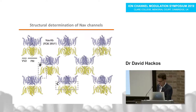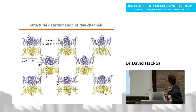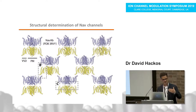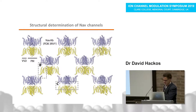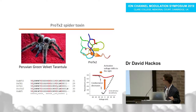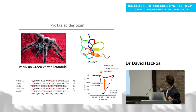It has been a long-term dream of ion channel structural biologists to use toxins that bind to voltage sensors, modulate them, and alter the voltage dependencies of those domains — basically bringing them into other states, such as down states, that we could potentially solve structures of. The first story I'll tell is about a peptide toxin isolated from the Peruvian green velvet tarantula, called ProTx2. It's a very small peptide of about 30 amino acids with a compact structure containing three disulfide bonds.